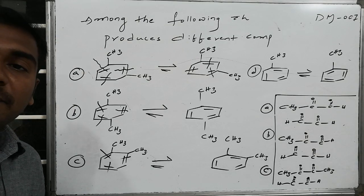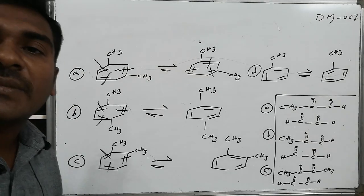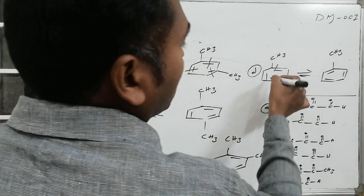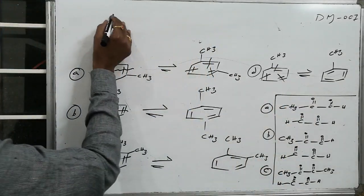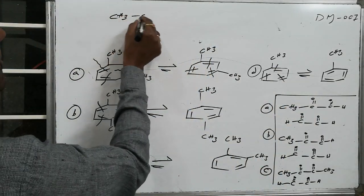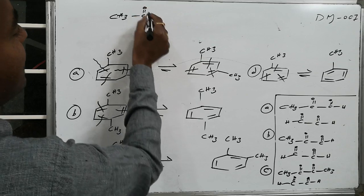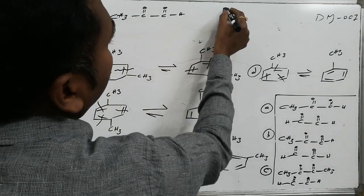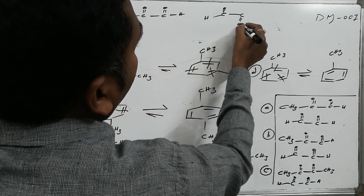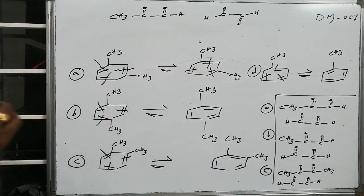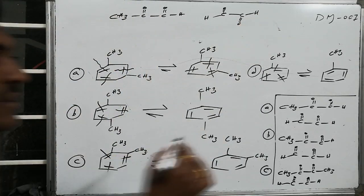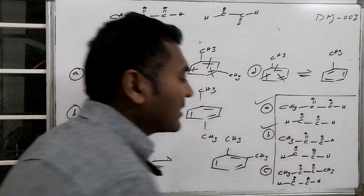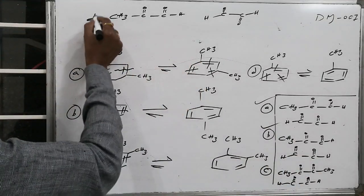For compound D (toluene/methylbenzene), ozonolysis cleavage produces methylglyoxal and glyoxal, similar to compounds A and B.